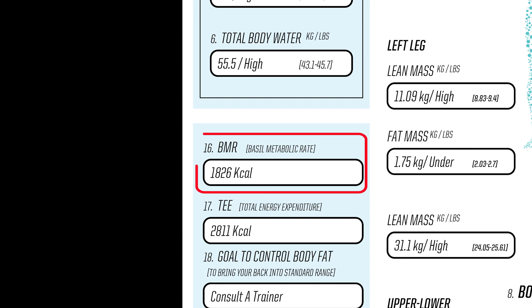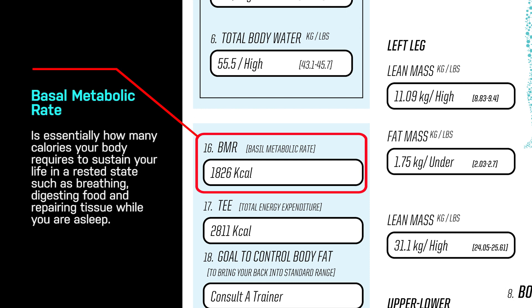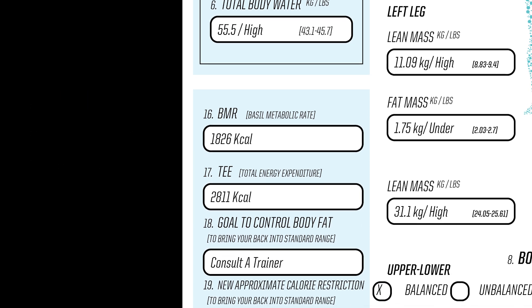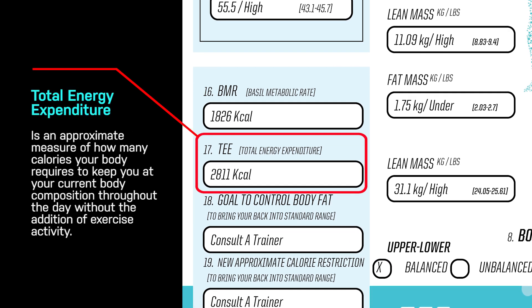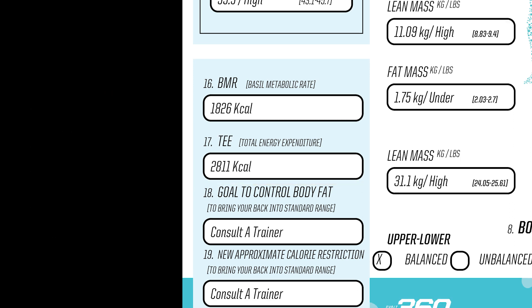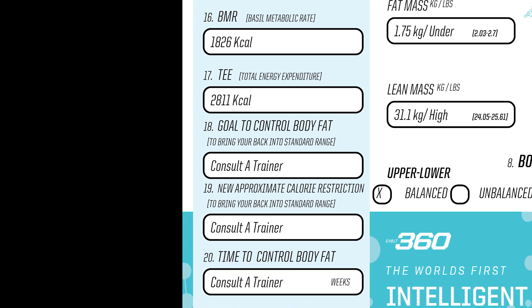On the bottom left-hand side, you will see some metrics related to metabolism. At number 16, you will see a measure of your basal metabolic rate, which is essentially how many calories your body requires to sustain your life in a rested state, such as breathing, digesting food, and repairing tissue while you are asleep. At number 17, you will see a measure of your total energy expenditure, which is an approximate measure of how many calories your body requires to keep you at your current body composition throughout the day without the addition of exercise activity.